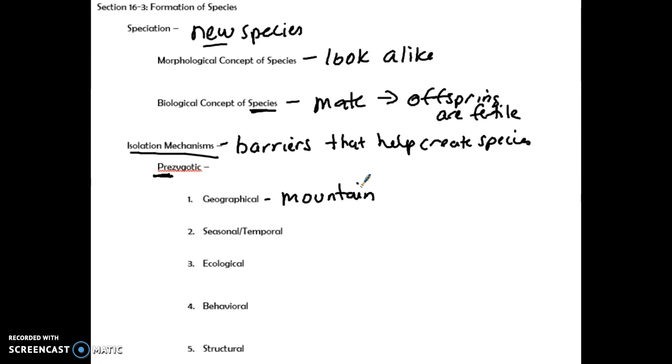Seasonal or temporal is where mating seasons are at different times. So humans mate 24, there is no mating season for a human, but for some organisms, their breeding season might be in a particular month. So if two organisms mate at two different times, they're never going to be able to mate, because the sperm is not going to wait for an egg. Therefore, seasonal or temporal is where you have two organisms, one might mate in the fall, one might mate in the spring, their sperm and egg will never meet.